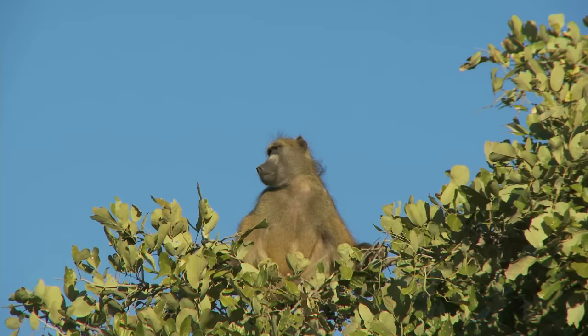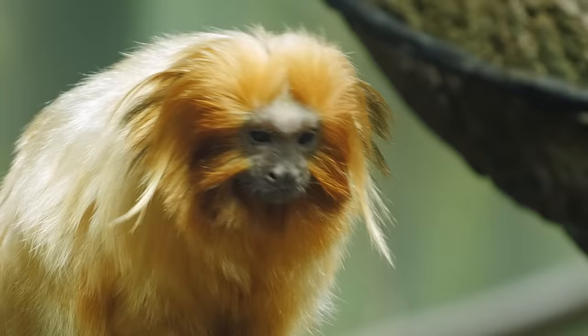The hominoid lineage split from the one leading to Old World monkeys between 24 and 38 million years ago, probably around 29 million years ago in the Oligocene. But the lineage leading to New World monkeys branched off a bit earlier, sometime between 33 and 44 million years ago in the Eocene.